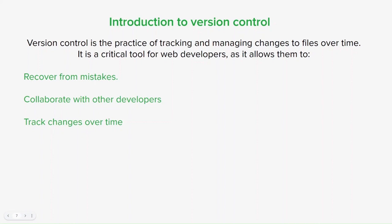Version control systems typically store a copy of every version of a file along with information about who made the changes and when. This can be used to revert to a previous version of the file, compare different versions, and identify who made specific changes. It's essential for any web developer who wants to work efficiently and collaborate effectively.